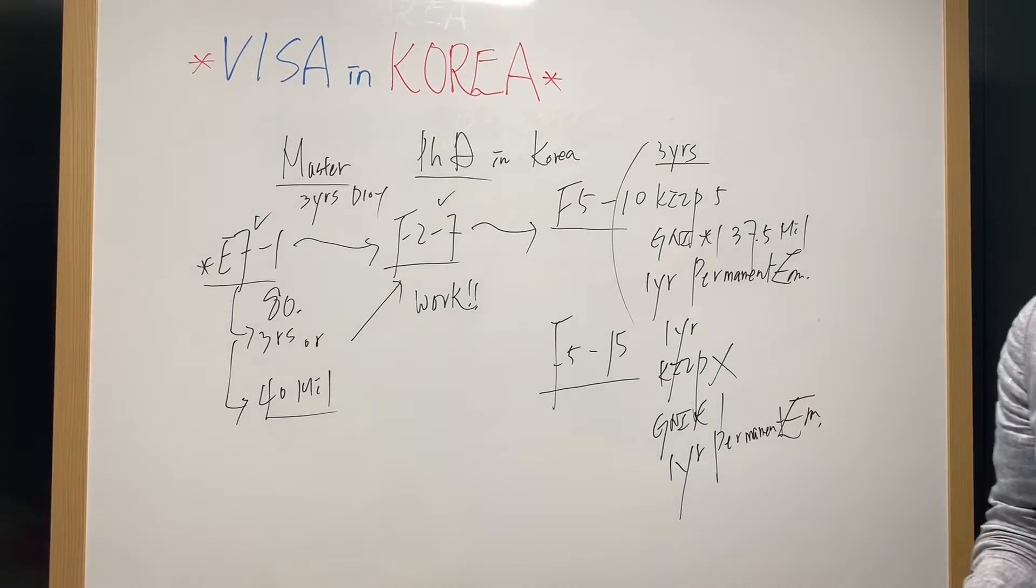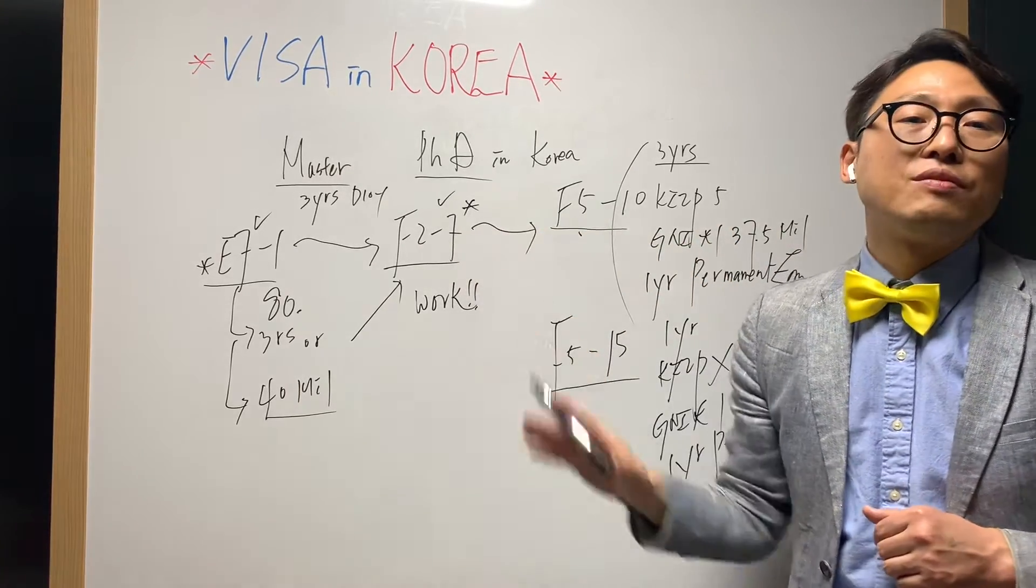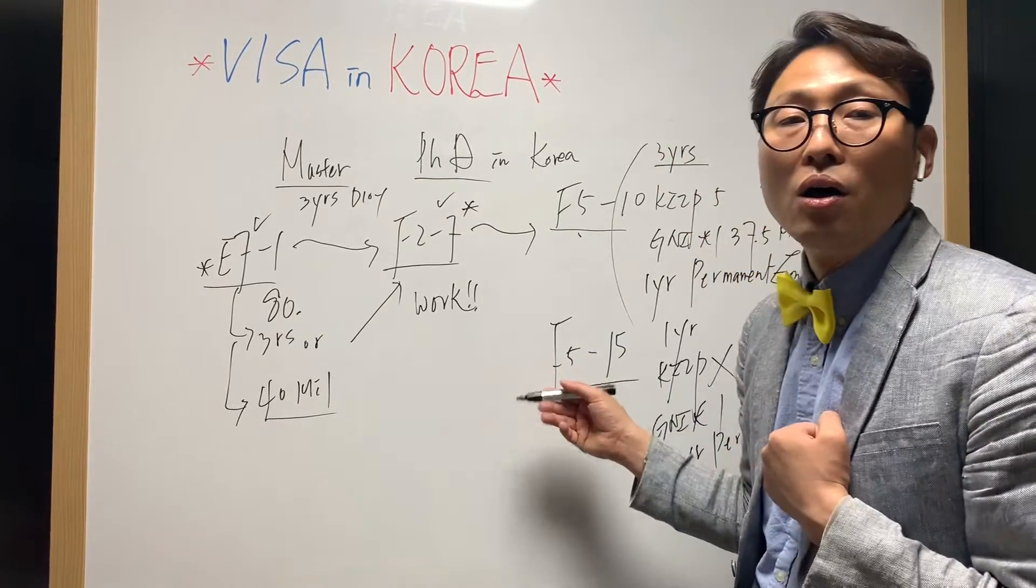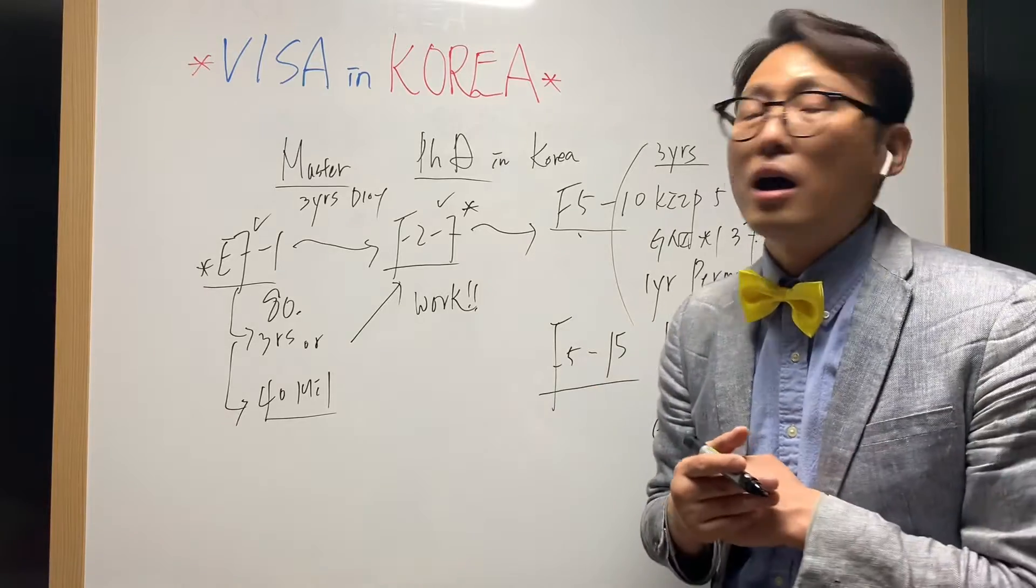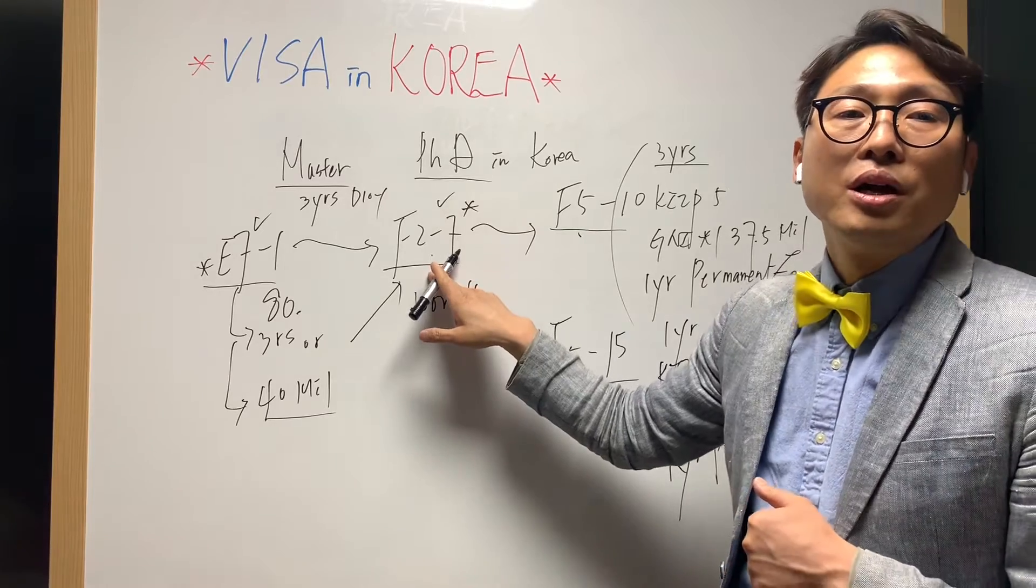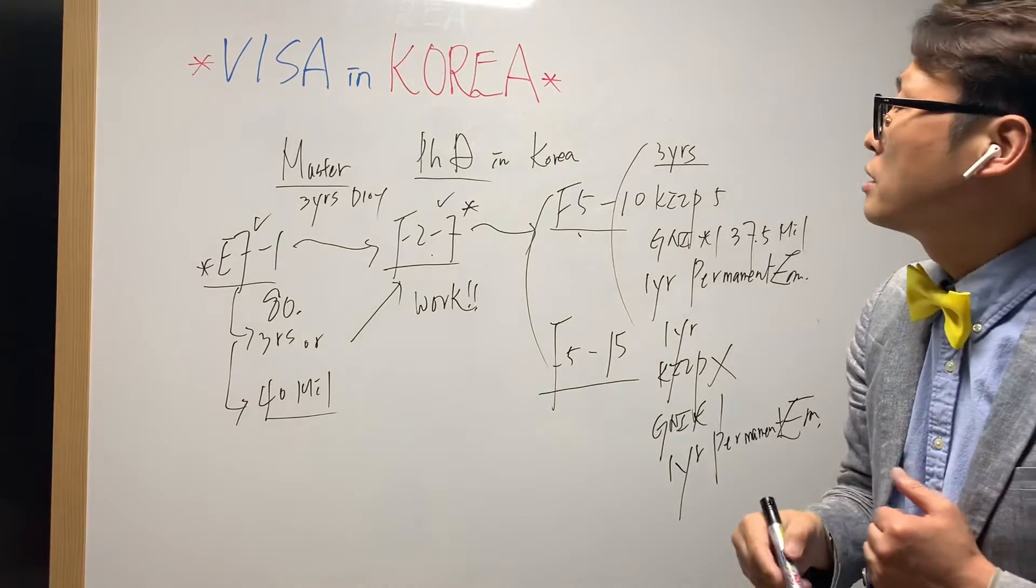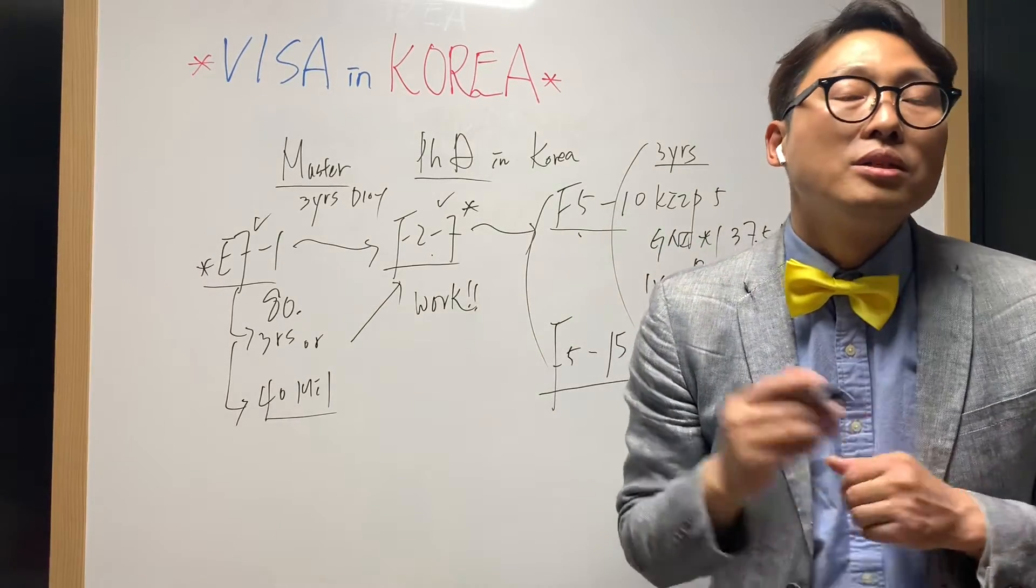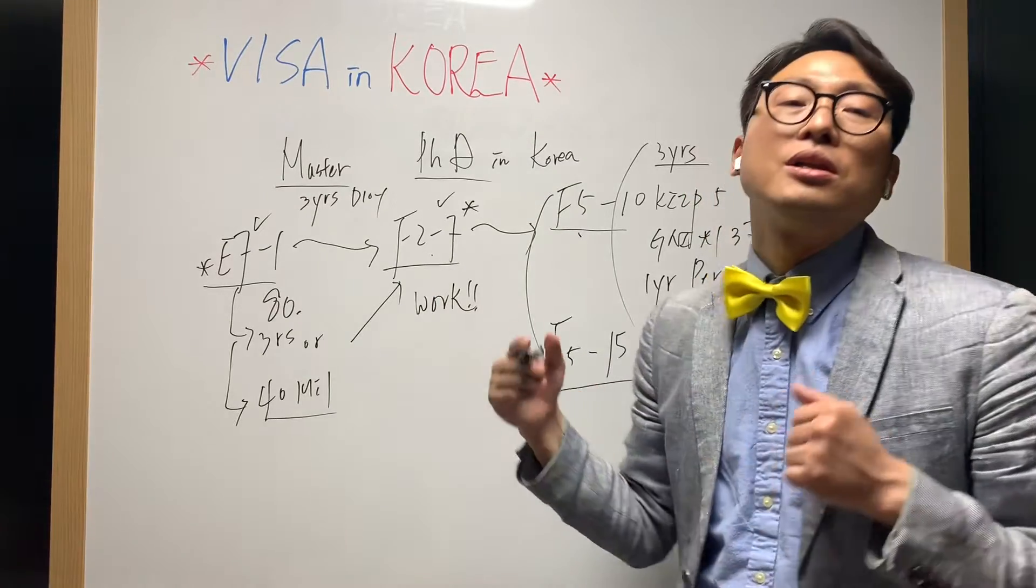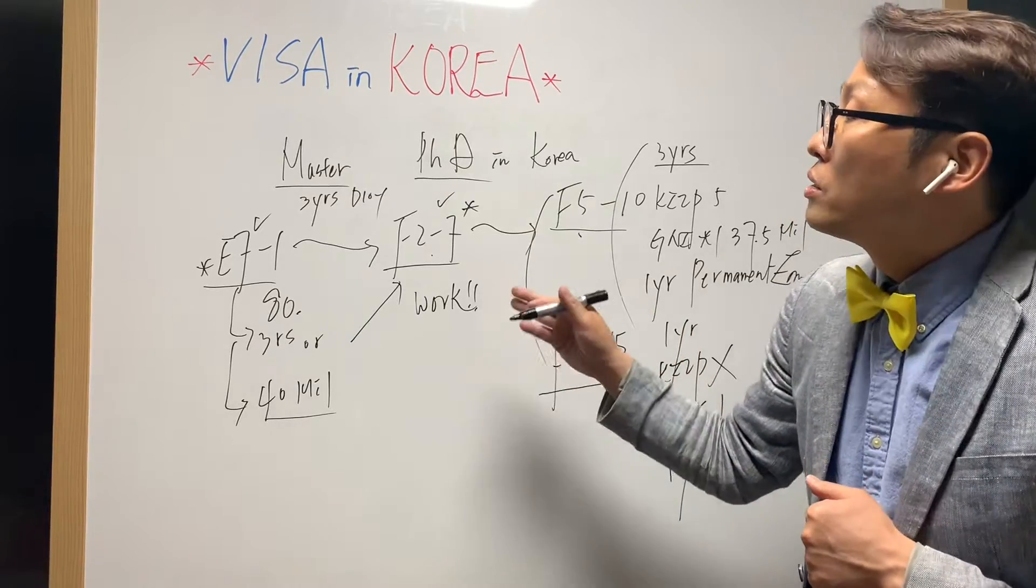When you apply for the F5 visa or F2-7 visa, if there is any violation of immigration law or criminal law in Korea, it'll be deducted a certain points, and depending on the situation you cannot apply for the F5 permanent residency. So please kindly keep Korean immigration laws and other relevant laws.